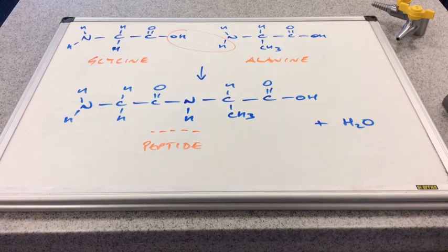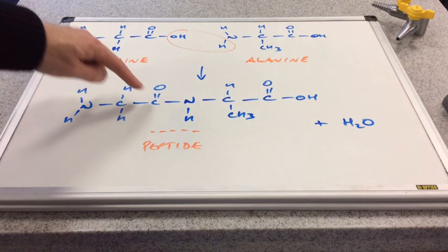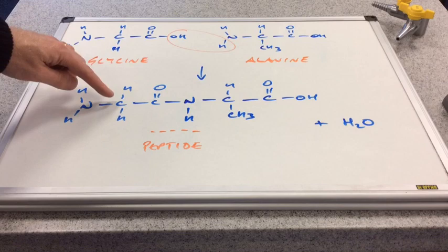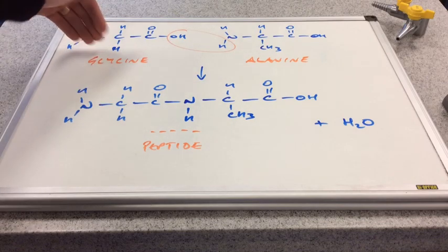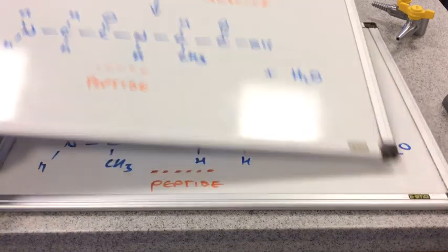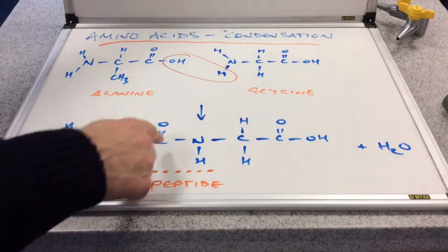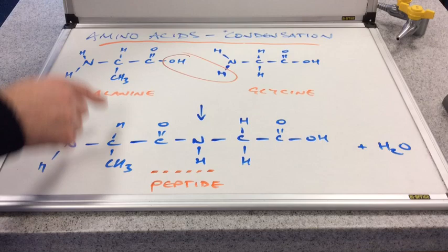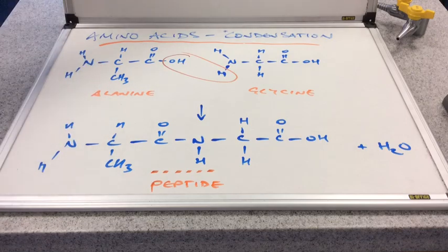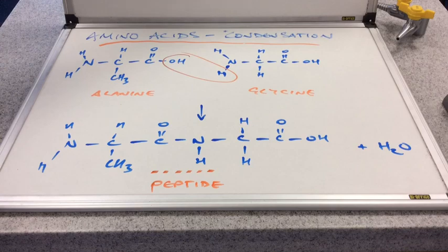So we'll just have a quick look and see how they're different. So if we just focus on the C double bond O part of the peptide link. So bonded to the left of that we've got a CH2 group. And that's obviously come from the glycine molecule. If we look at the first one, then to the left of the C double bond O, we've actually got a CHCH3 group. Obviously that came from the alanine molecule. So that makes this di-peptide different to the other one.